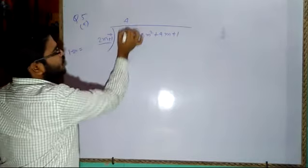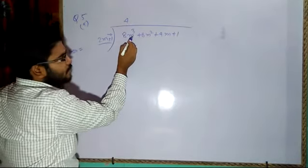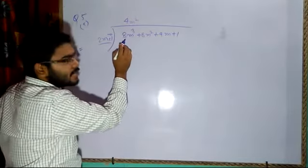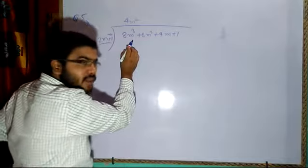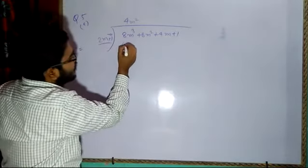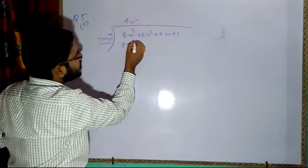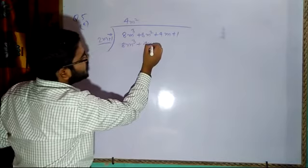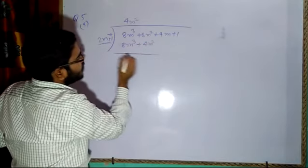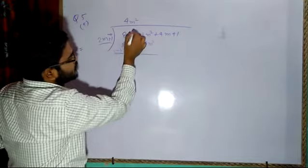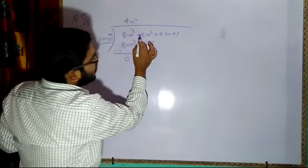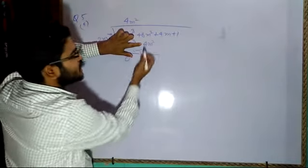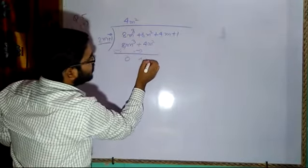Now, 2 should be multiplied how many times to get 8? Four times. And to get m³, I need m² in the quotient. So the first quotient term is 4m². Multiply: 2m times 4m² gives 8m³, and 1 times 4m² gives 4m². Subtract: 8m³ cancels, and 8m² minus 4m² gives 4m². Bring down 4m.